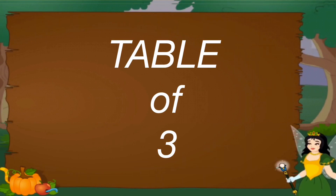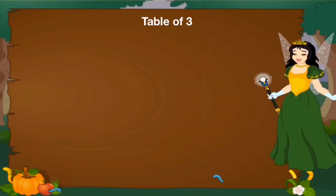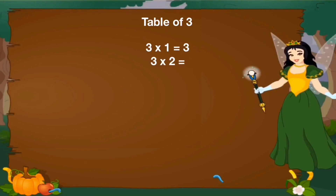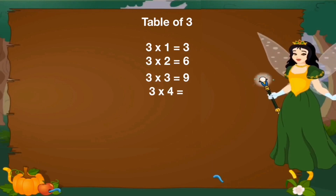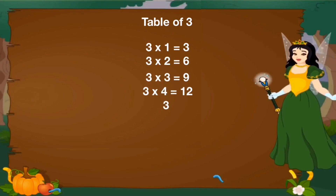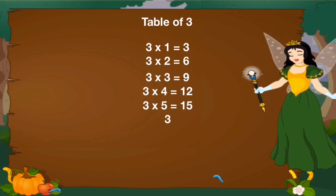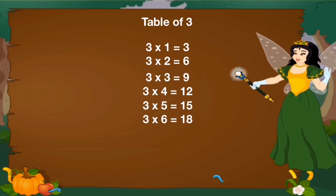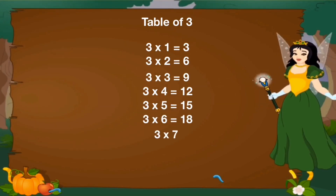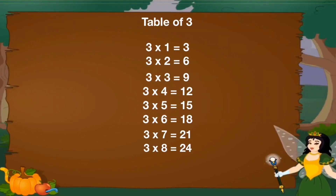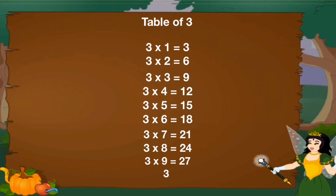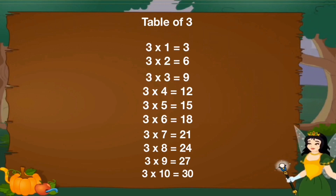Let's revise table of 3. 3 1's are 3, 3 2's are 6, 3 3's are 9, 3 4's are 12, 3 5's are 15, 3 6's are 18, 3 7's are 21, 3 8's are 24, 3 9's are 27, 3 10's are 15.